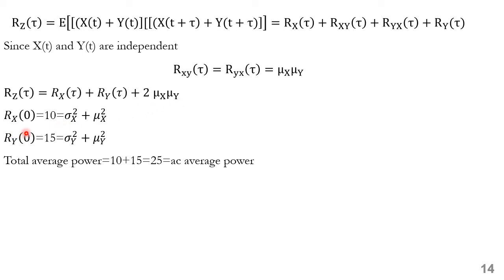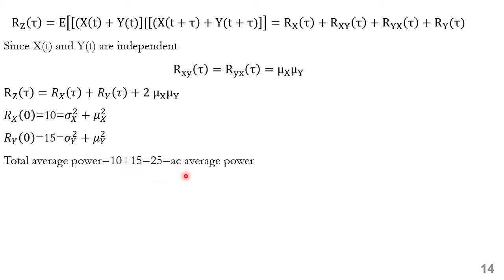R_x(0) = 10 = σ_x² + μ_x² and R_y(0) = 15 = σ_y² + μ_y². The total average power = R_z(0) = R_x(0) + R_y(0) = 10 + 15 = 25.